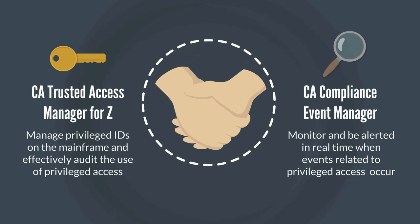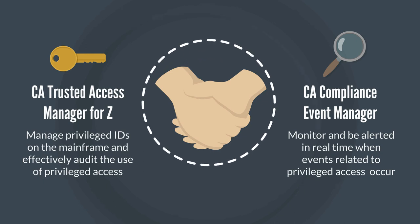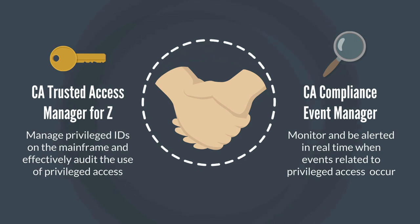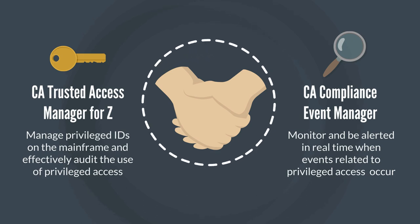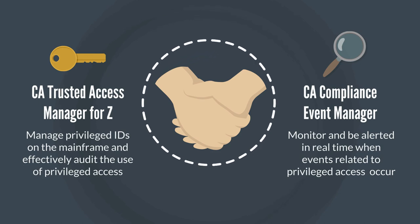Using CA Compliance Event Manager, you can augment CA Trusted Access Manager for Z's auditing capabilities to monitor and be alerted in real time when these privileged access events occur, letting you catch potential misuse of privileged ID credentials more quickly so you can lock down potential threats in a timely manner.